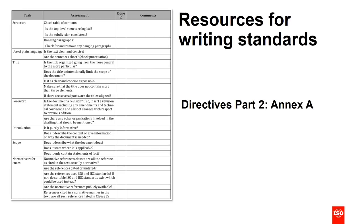In Annex A of the Directives Part 2, you'll find a checklist added in the most recent edition. When you submit a document to ISO, it's helpful to go through this checklist to make sure your document complies with all the rules — for example, checking that your title goes from general to particular, that it's clear and concise, and that you've added the correct foreword information. This saves time as the process moves forward.